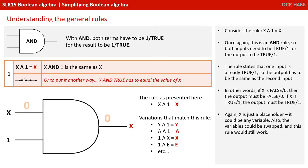Consider the rule X AND 1 equals X. Once again, this is an AND rule, so both inputs need to be true or 1 for the output to be true or 1. The rule states that one input is already true or 1, so the output will have to be the same as the second input. In other words, if X is 0, then the output will be 0, and if X is 1, the output will be 1. Again, X is just a placeholder — it could be any variable.